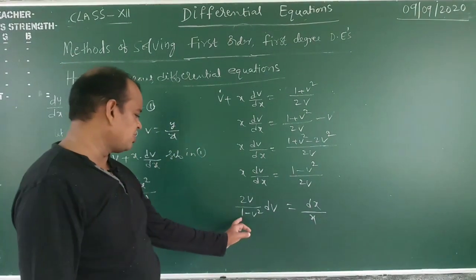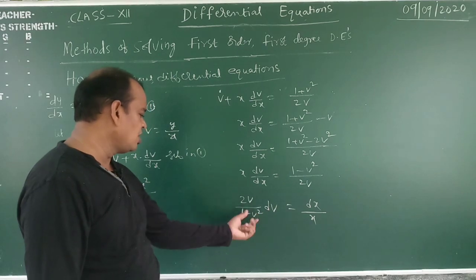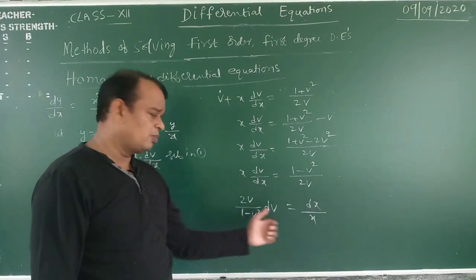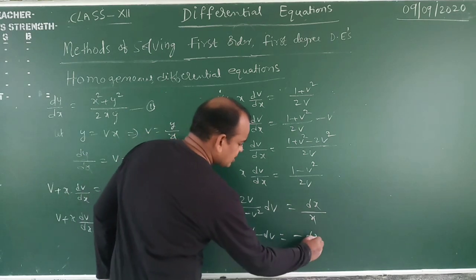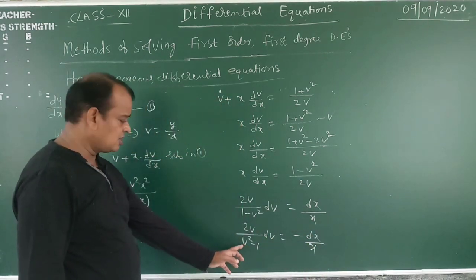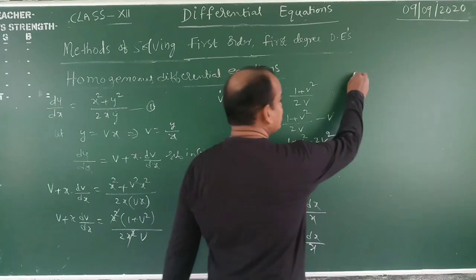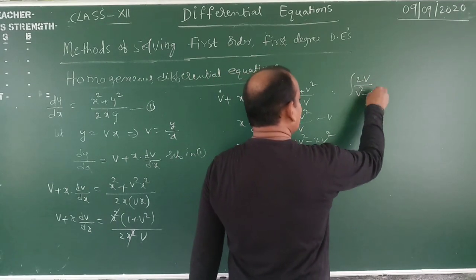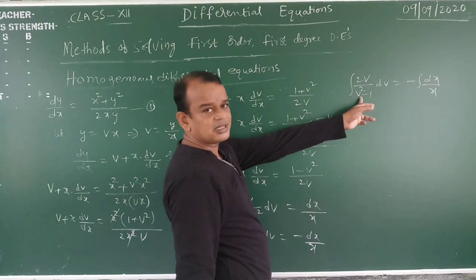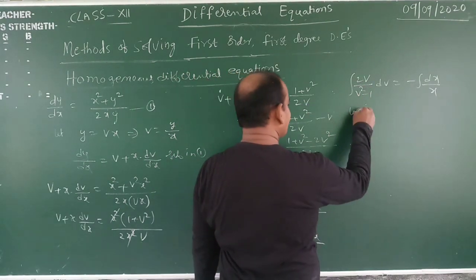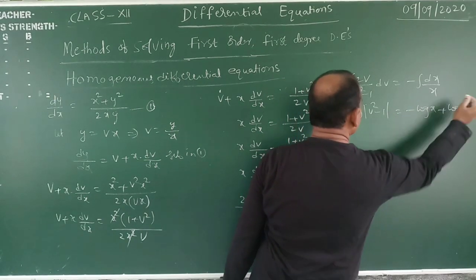Observe that the derivative of (1 − v²) is −2v. Taking −1 common: 2v/(v² − 1) dv = −dx/x. Rearranging: this is of the form f'(x)/f(x), where f(v) = v² − 1 and f'(v) = 2v. Now integrating both sides: ∫2v/(v² − 1) dv = −∫dx/x.